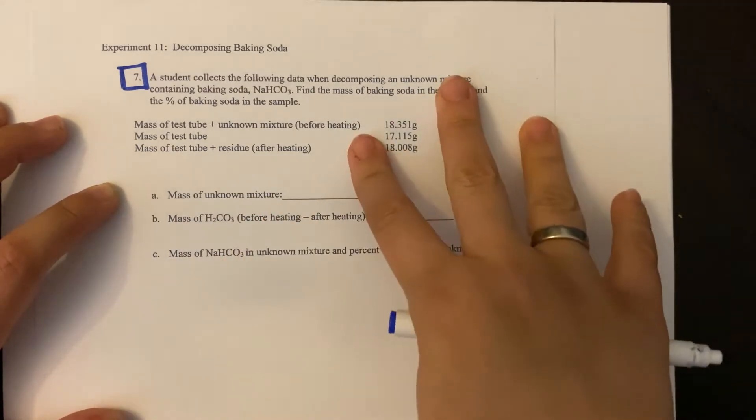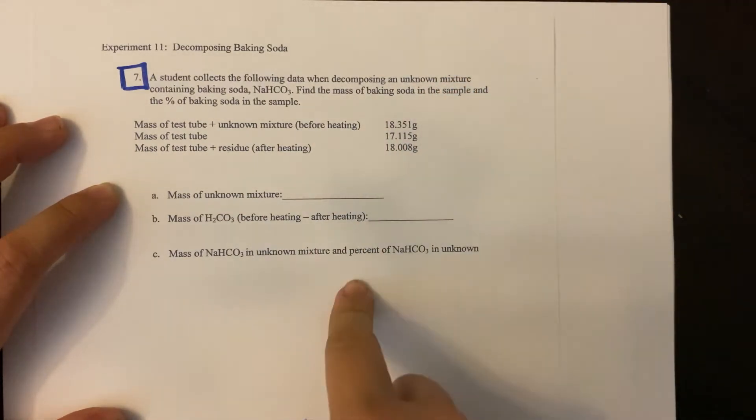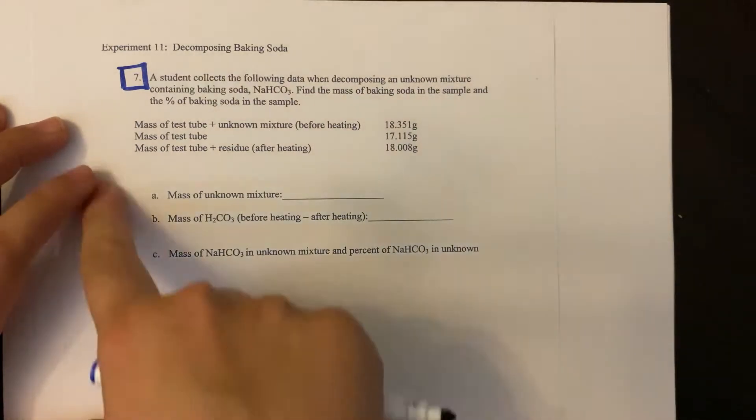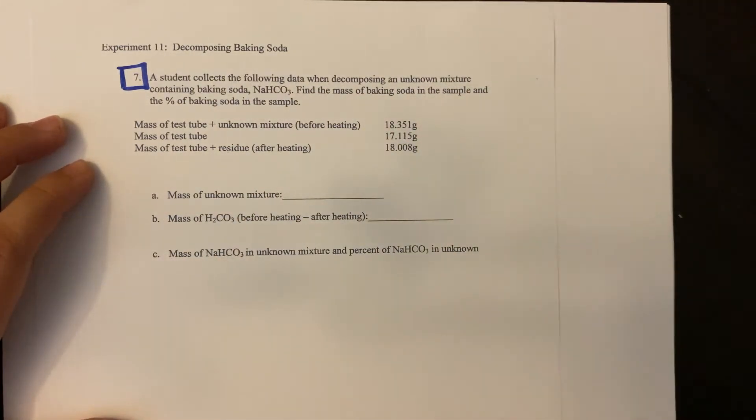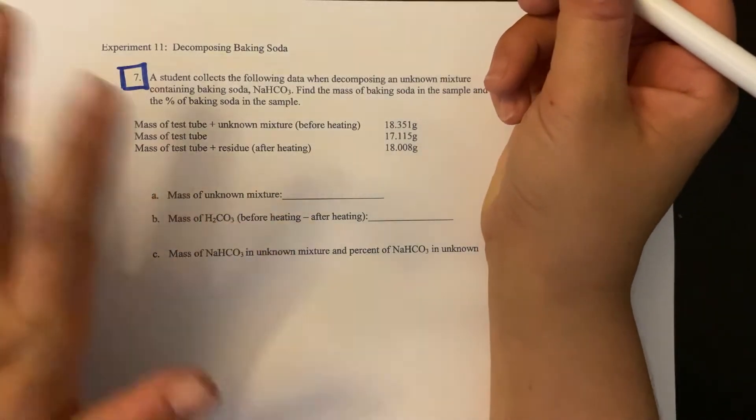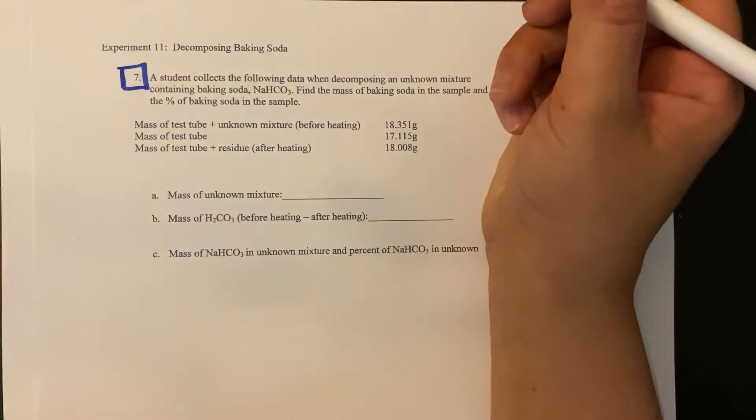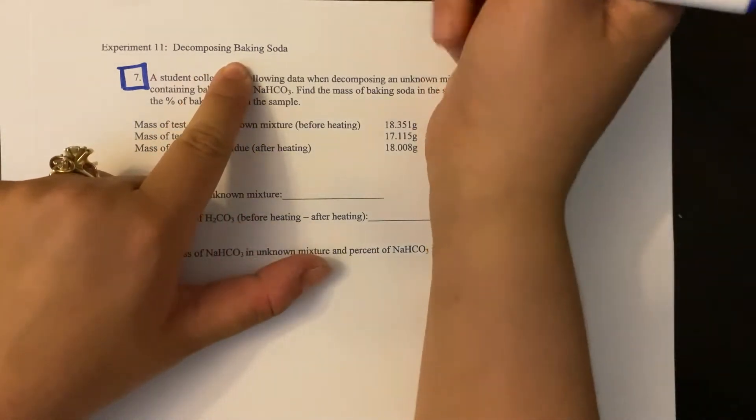Before I would do any of this, what I would do personally is I would write down my balanced equation at the top of my page or the side of my page or somewhere, because it's not on here, and it's really useful to at least know what the heck you're dealing with. And if you don't know it, you can just scroll back up in the lab and look, but this is the decomposition of baking soda.